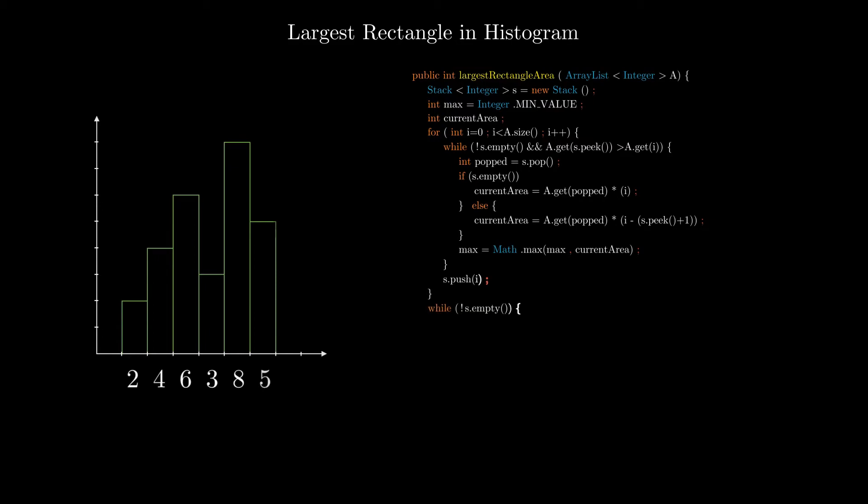Once we have iterated through array, if the stack is still not empty, this means that there was no element smaller than the stack top which could have kicked it out of the stack. So in the absence of right smaller element, we will need to consider the end of the array for our calculations. The rest of the code is similar. We pop the elements one by one, calculate the area of rectangle for both the cases and update the max area. Once we are done with all the elements, return the max as our answer.